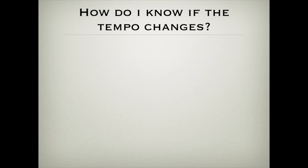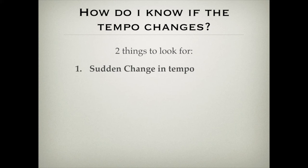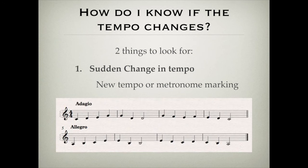So how do I know if the tempo changes as I'm going through a piece of music? Two things to look for. Firstly, if there's a sudden change in tempo — the composer wants to change speed immediately — then you'll simply see a new tempo or a new metronome marking. Have a look at this piece of music. You can see the first four bars have the marking adagio, meaning slow. The next line has allegro, so the composer is saying those next four bars should be played fast. The tempo would change straight away.